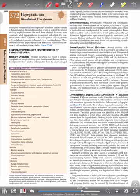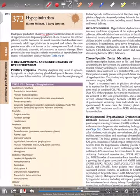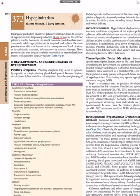Hypopituitarism refers to inadequate production of anterior pituitary hormones. It leads to features resulting from impaired production of one or more anterior pituitary trophic hormones. It can result from inherited disorders, but more commonly adult hypopituitarism is acquired rather than inherited.